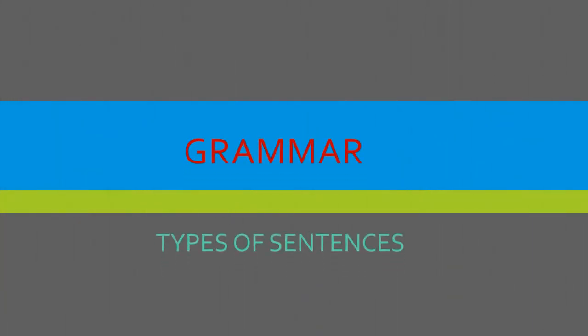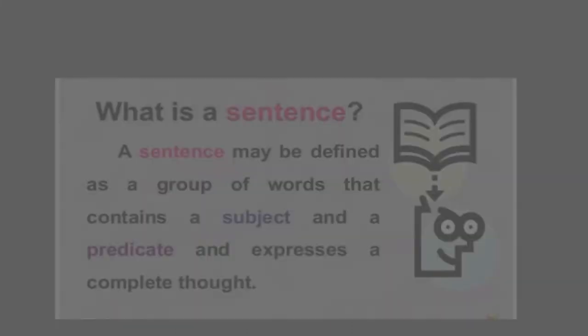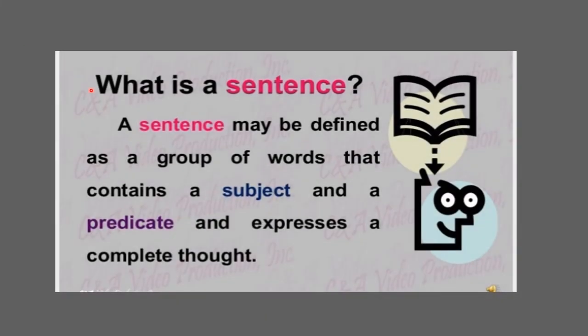Grammar lesson: Types of Sentences. What is a sentence? A sentence may be defined as a group of words that contains a subject and a predicate and expresses a complete thought.